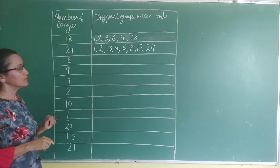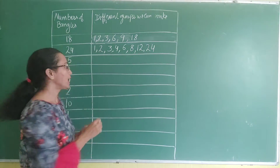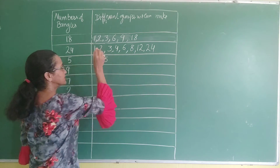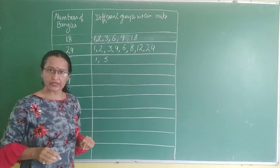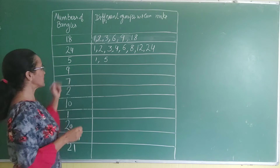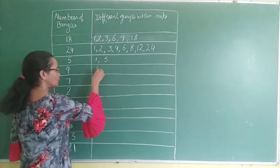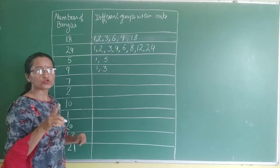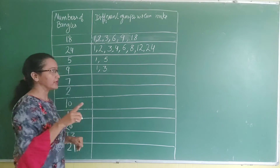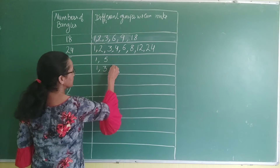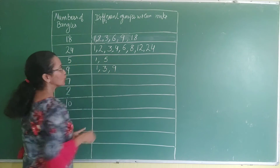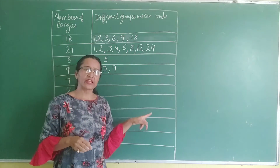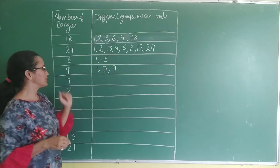Next is 5. For 5, it is in the table of 1 and in the table of 5. Next is 9. So you can make a group of 1 and a group of 3 — three threes are 9. For 9, groups of 4, 5, 6, 7, 8 cannot be made.